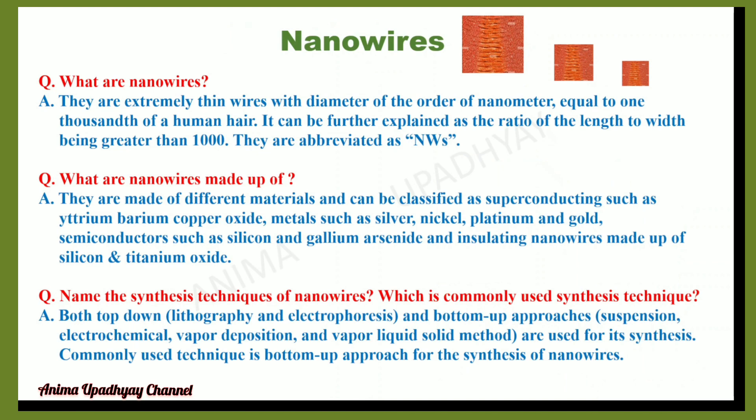What are nanowires? They are extremely thin wires with a diameter of the order of a nanometer, equal to one thousandth of a human hair. So you can imagine how thin a nanowire is by comparing it to human hair. Its diameter is one thousandth of human hair, and the ratio of length to width is greater than one thousand. Nanowires are abbreviated as NW.